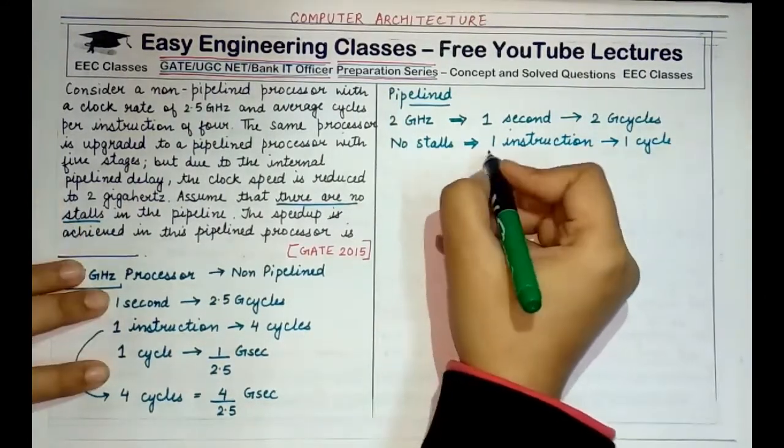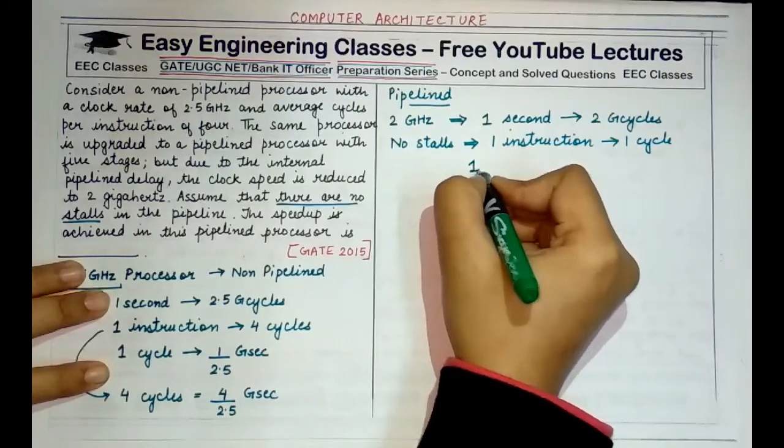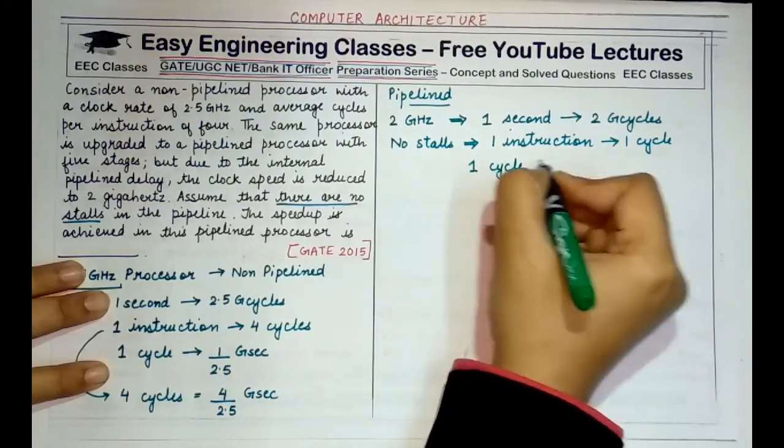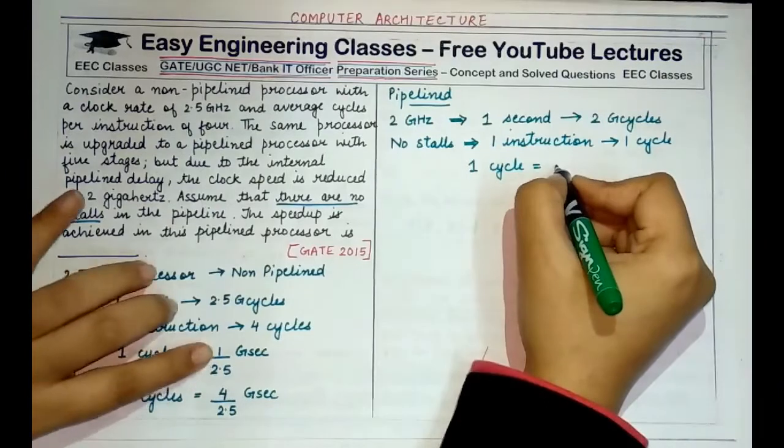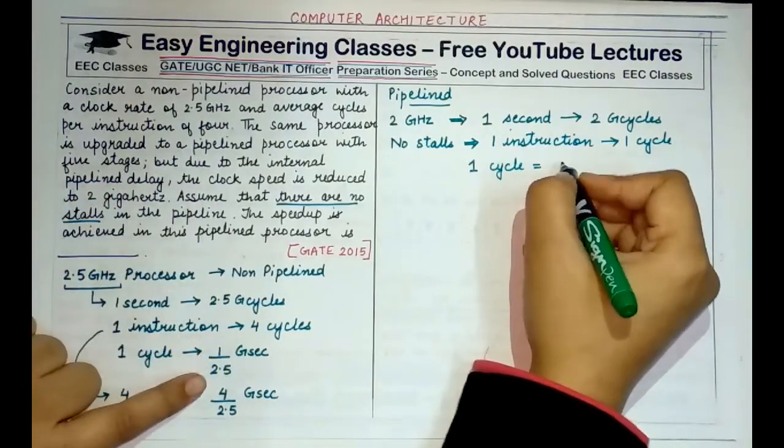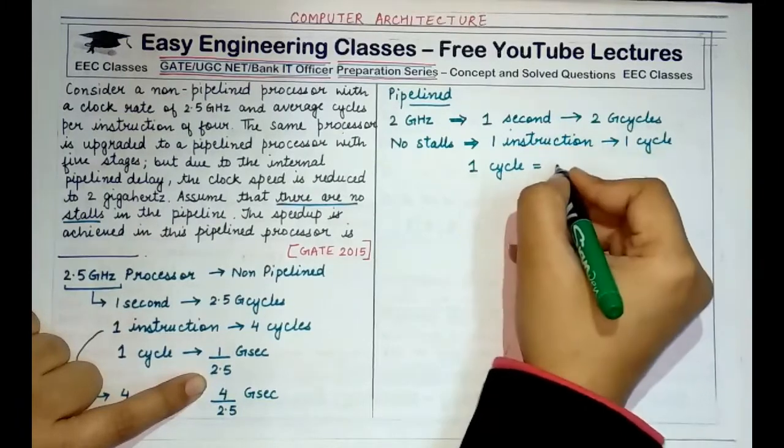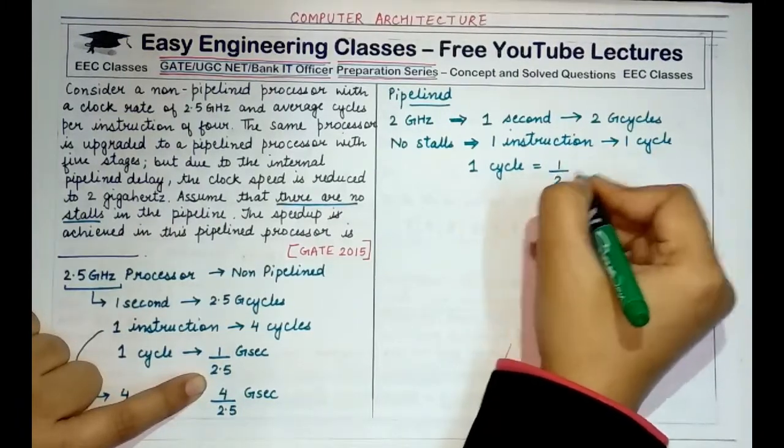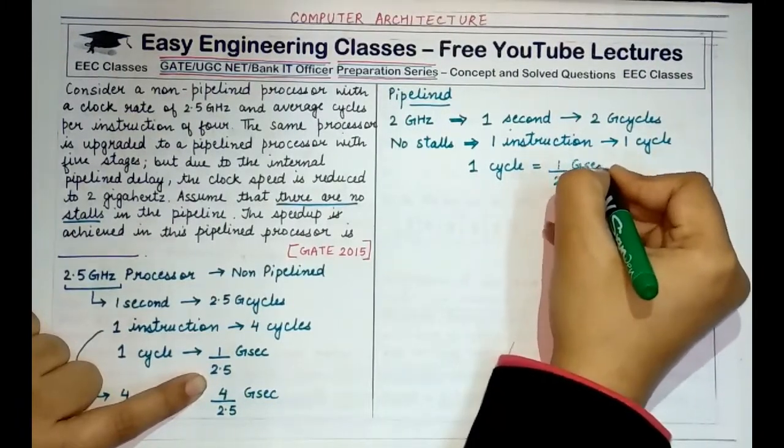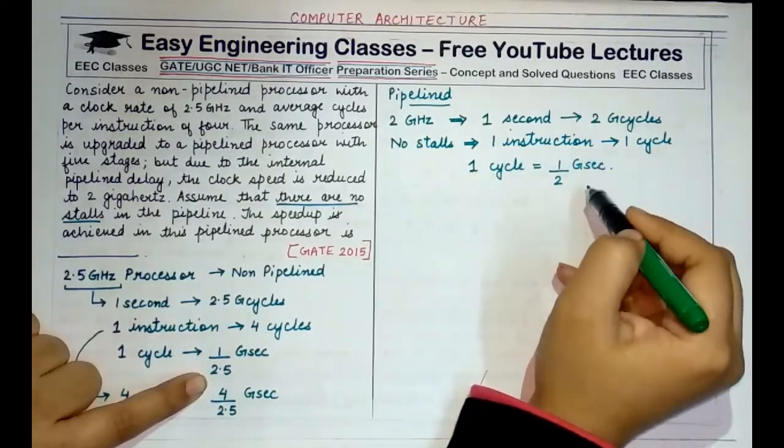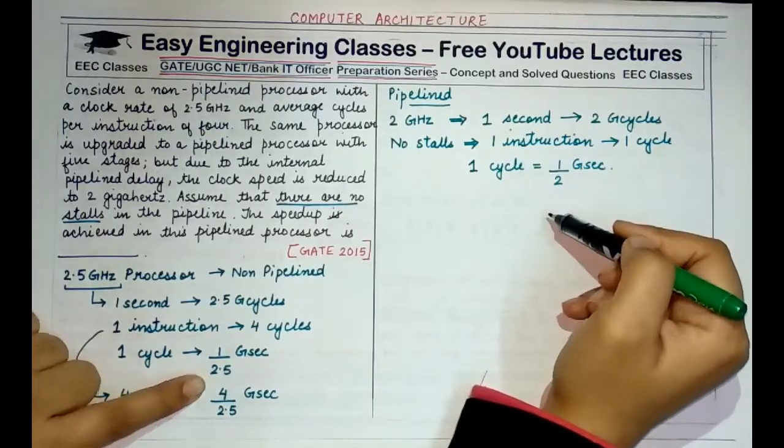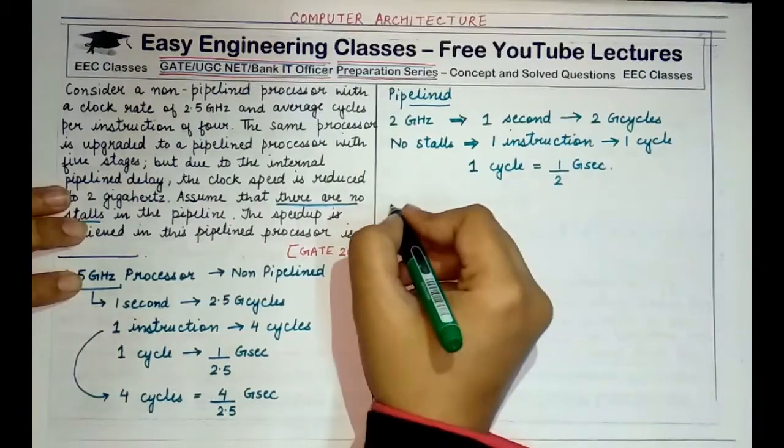Just like we found out the time taken by one cycle to complete was 1 by 2.5 GHz in the previous case, here, the time taken to complete one cycle would be 1 by 2 GHz. And this would be the time that would be required by a single instruction to complete. Now, what would be the speedup?